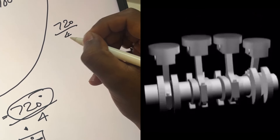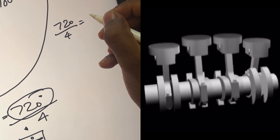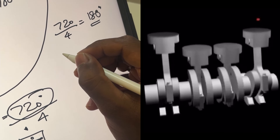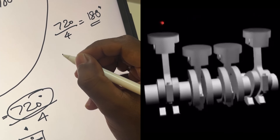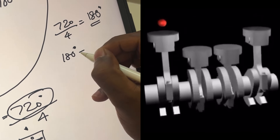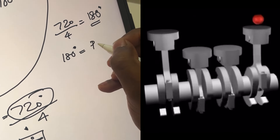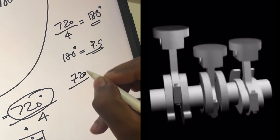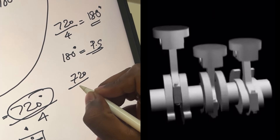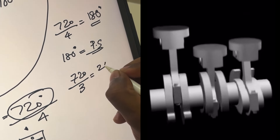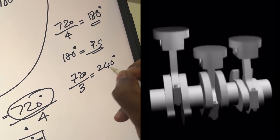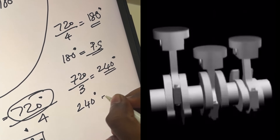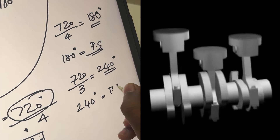In 720 degrees divided by 4, you get 180 degrees. That's why in a 4-cylinder engine, there is a power stroke every 180 degrees. But in a 3-cylinder engine, 720 degrees divided by 3 cylinders equals 240 degrees, meaning there is a power stroke every 240 degrees.